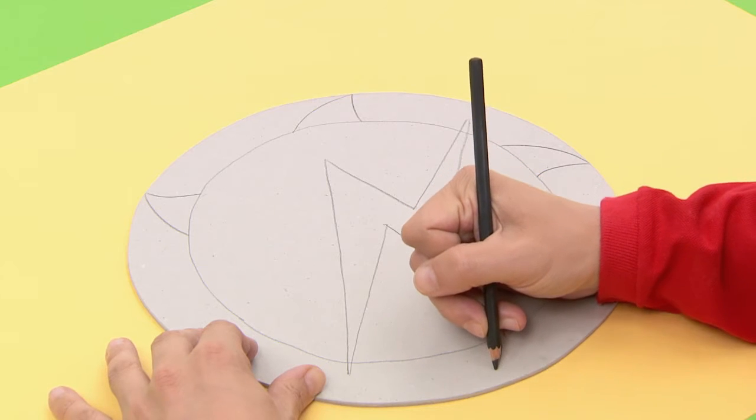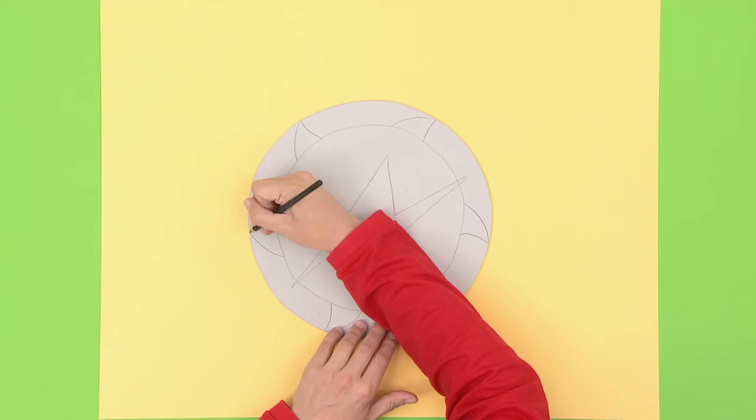Now make shapes outside and inside the circle. For example, some shark teeth. Don't forget, you can draw any shape you like. Just use your imagination.